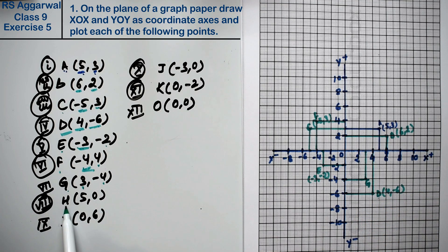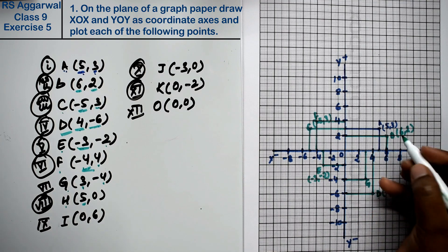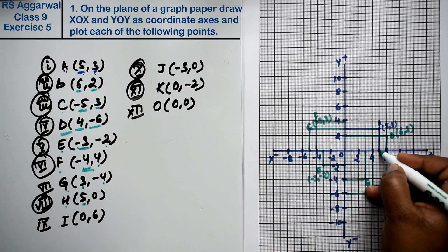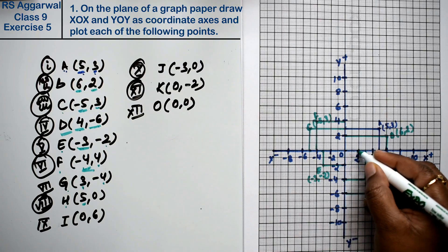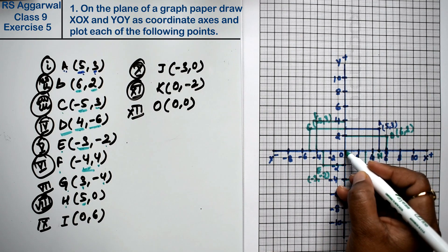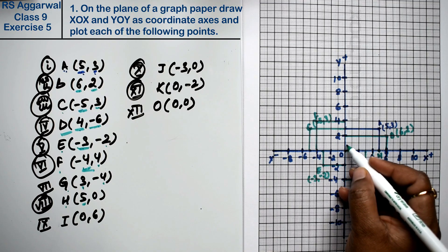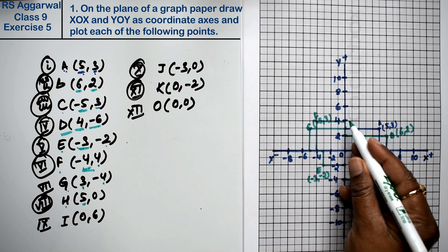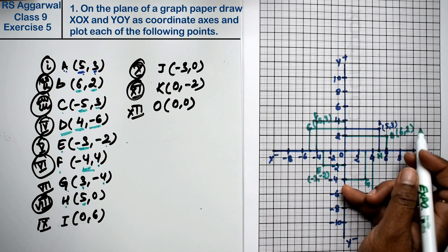Next is point H: x is 5 and y is 0. Since y is 0, we do not go up or down — the point lies directly on the x-axis. If y is 0, our value is just x. So point H lies on the x-axis at (5, 0).